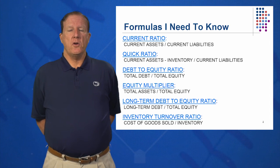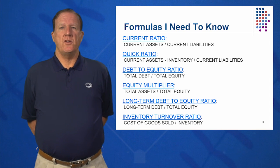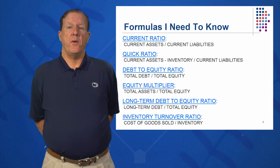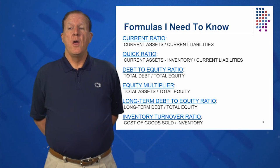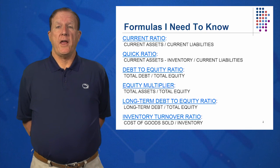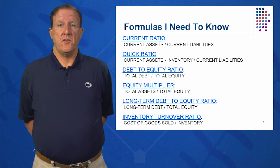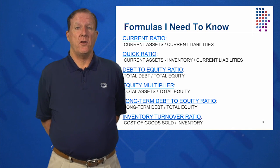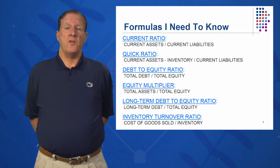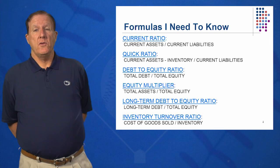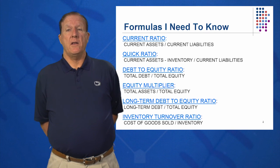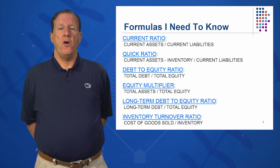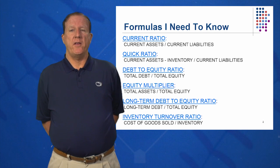For short-term solvency ratios, you want to memorize the current ratio and the quick ratio. We'll also be looking for mnemonics so that we don't have to memorize anything — little memory tricks we can use to develop these ratios and kind of know them versus memorize them.